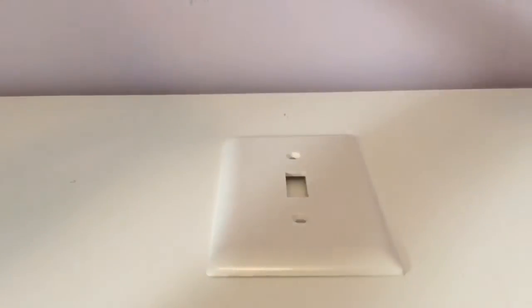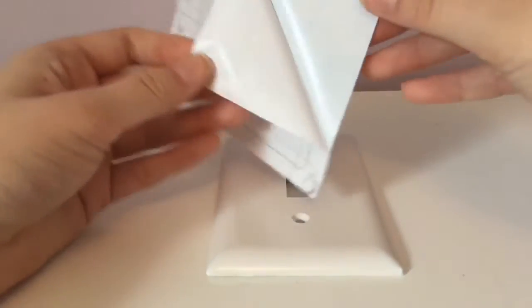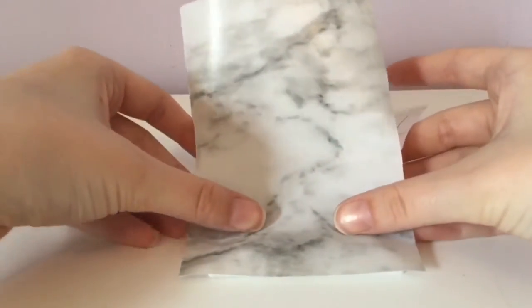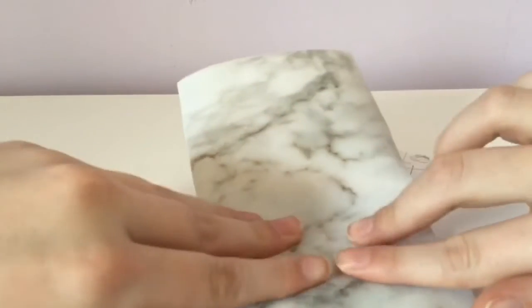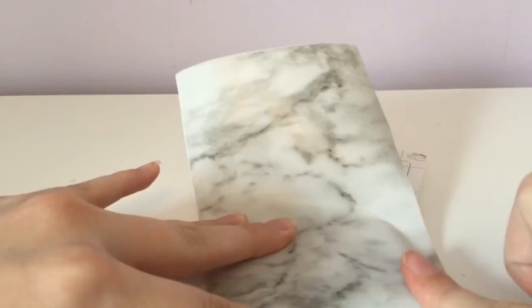Now take your contact paper and you're going to peel up the edge. And you're going to place it on your light switch cover. And smooth it out to make sure it has no air bubbles.